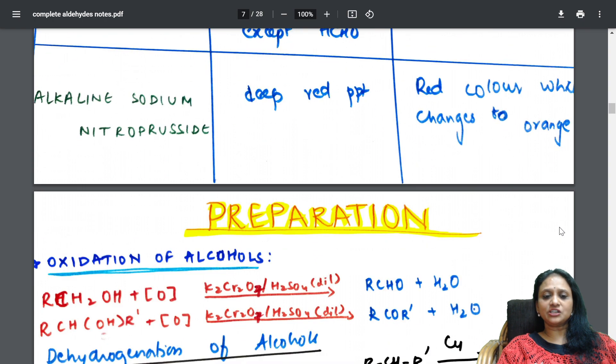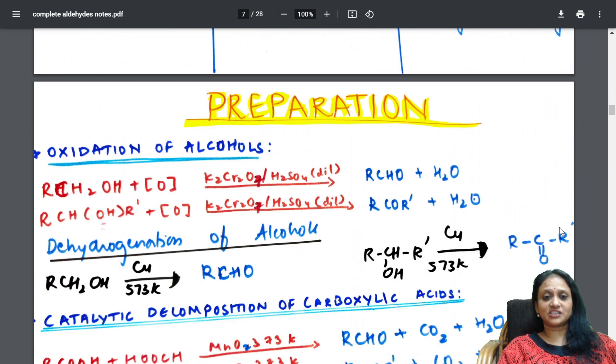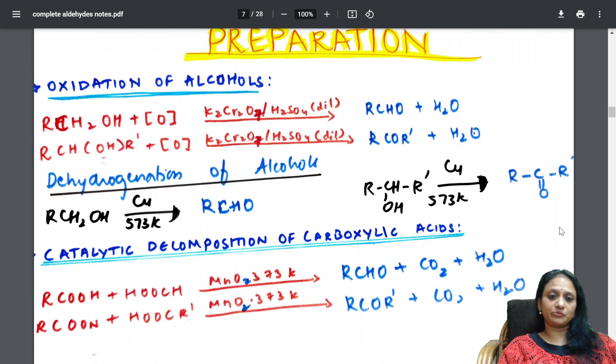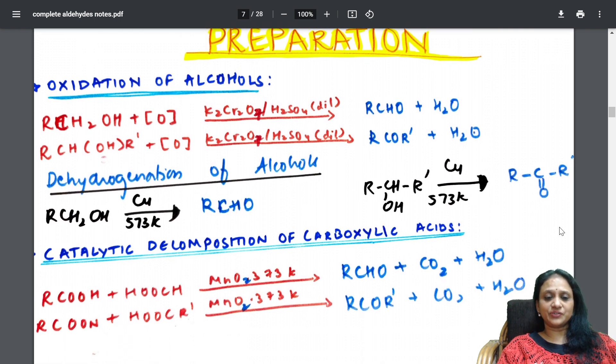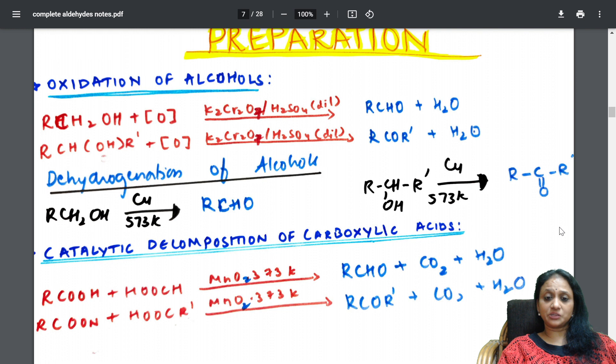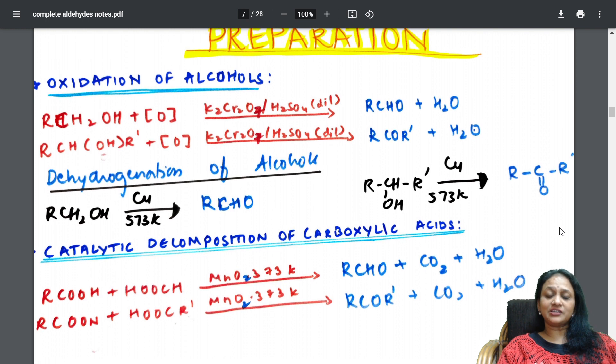Slowly, I have taken you into the preparations. Just check students. How can I prepare aldehydes along with the reagents which are mentioned in the top of the arrow? So, oxidation reaction, what are the products? Dehydrogenation reaction, what are the products? Catalytic decomposition, what are the products? Like that, all the reactions, everything together is mentioned in one page.